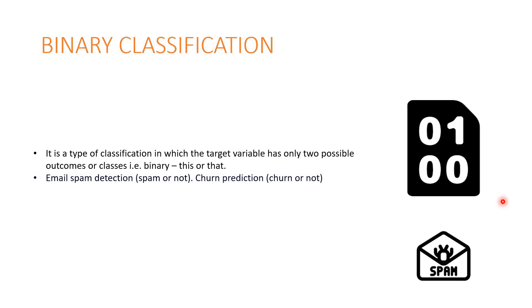Another example is churn prediction: churn or not, that's all. So this is only binary, and this kind of classification is referred to as binary classification.